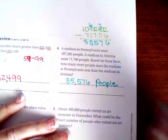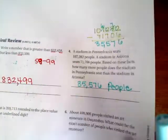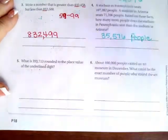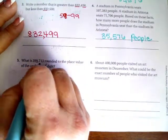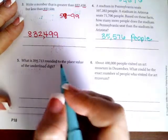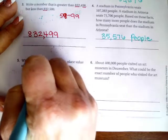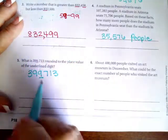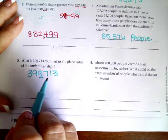I was trying to figure out if they had written fans or people. So we're going to go down to number five. Number five says what is 399,713 rounded to the underlined digits. So I have to know if this nine needs to bump this up or if it needs to stay the same.